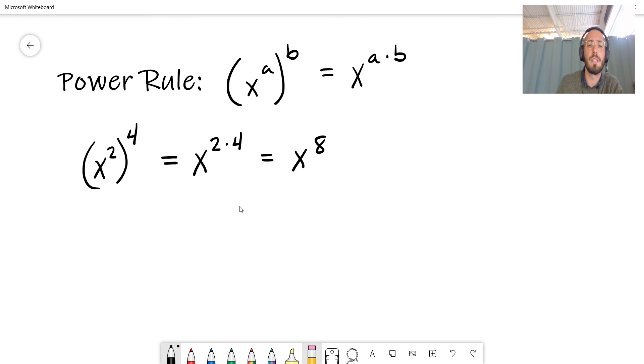So x squared all raised to the power of 4 is equal to x to the power of 2 times 4, which is equal to x to the 8th. And again, like our two previous rules, this one makes a lot of sense as well.